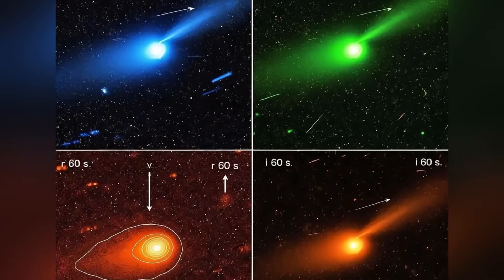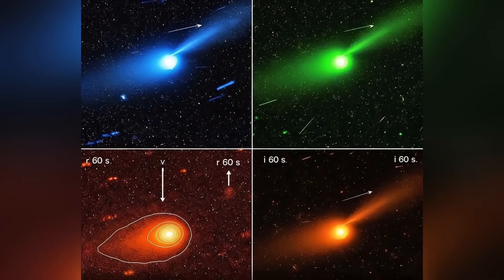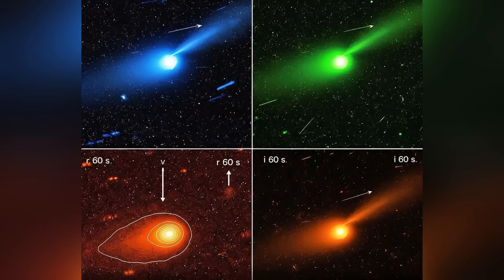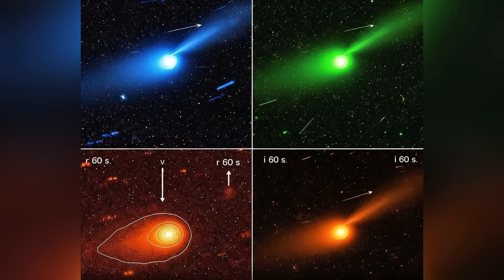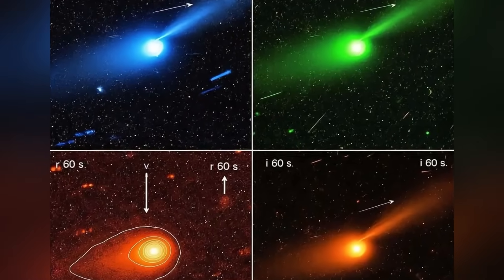The mystery deepened in mid-September, when fresh imagery revealed the coma glowing green. This emerald hue is typically associated with carbon-based molecules such as diatomic carbon, or C2, which fluoresces under sunlight.